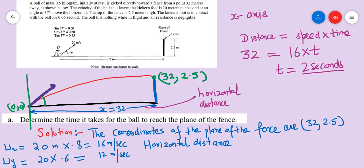It grazes past the top of the fence, which means it just has to cross the fence over. So the coordinates of the top point of the fence are 32 comma 2.5.